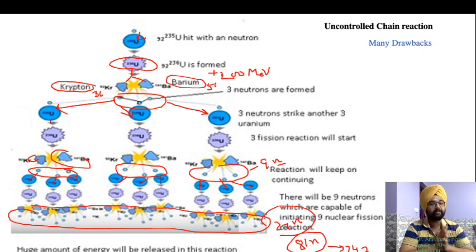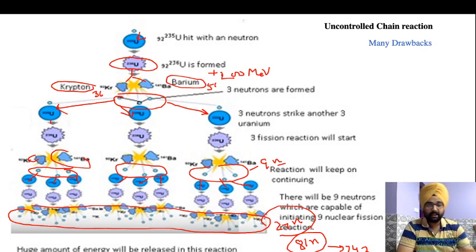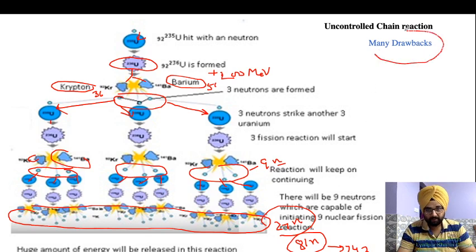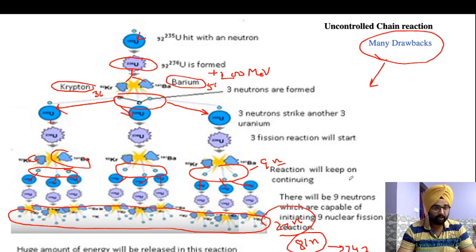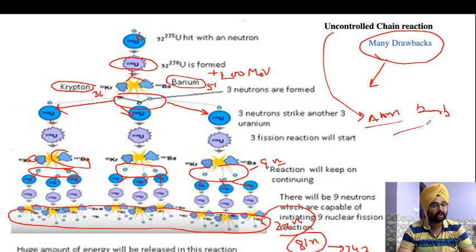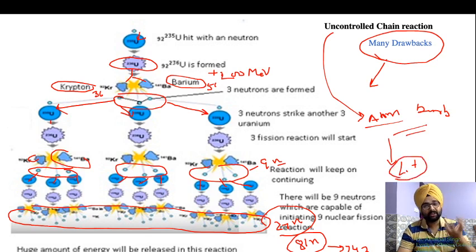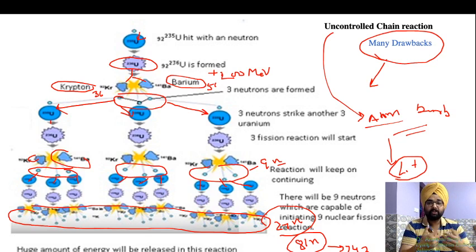It is very difficult to control this reaction. If we cannot control this process, we can use this uncontrolled reaction in the formation of an atom bomb or neutron bomb. For example, 'Little Boy' is essentially a neutron bomb — an uncontrolled chain reaction that starts with a strong reaction and continues to multiply, with a huge release of energy.